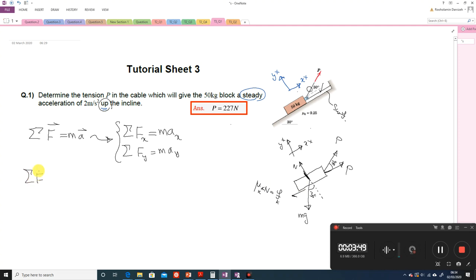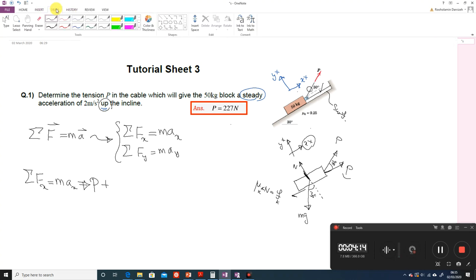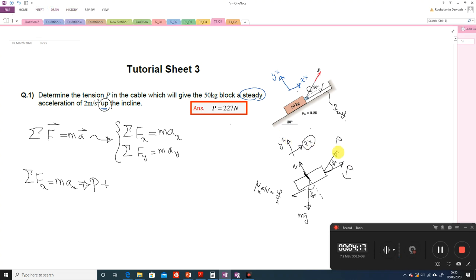Okay, from equilibrium of force in the x direction, we have P, this is the first horizontal force, which is positive. Then we have for the incline P, the second one, we have two components. For this one we have horizontal component which is P cos 30°.